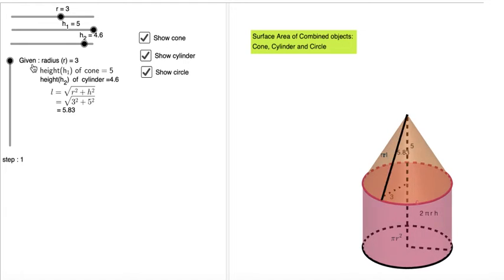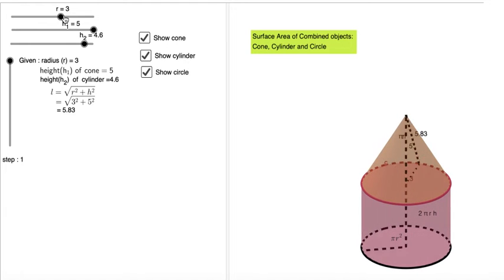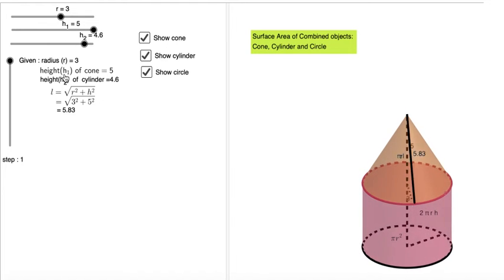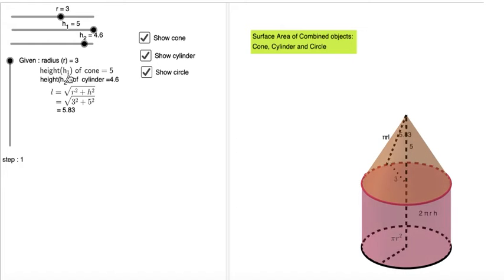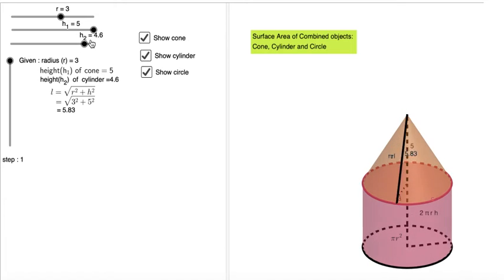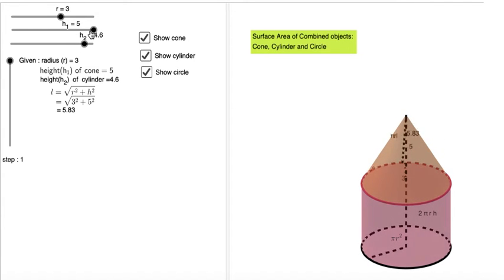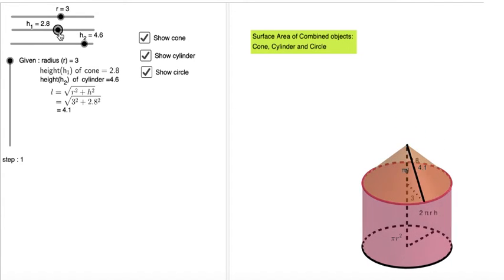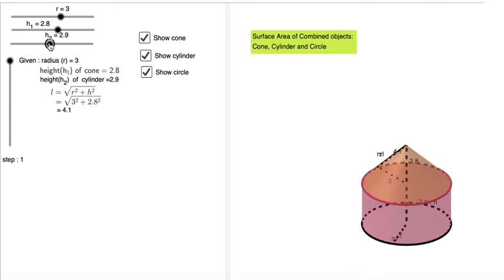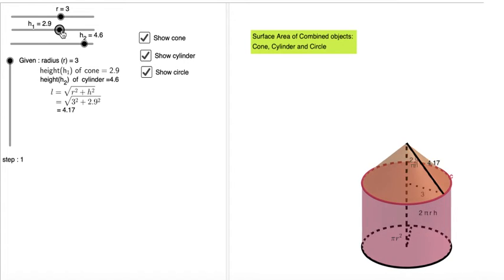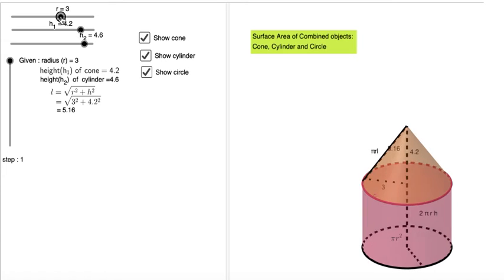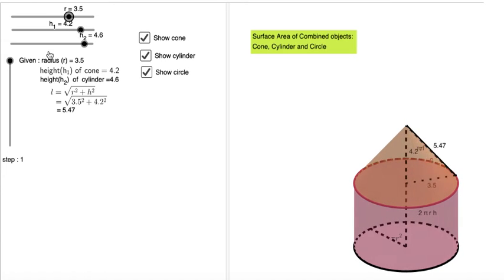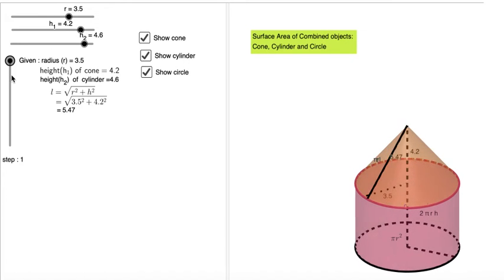Select step number 1. Given radius is 3 and height of the cone h1 equals 5. As you see here, h2 is 4.6. You can change the height of the cone or the height of the cylinder. You can increase and decrease the height. Now similarly radius. So now click on here to move this dot and bring down.